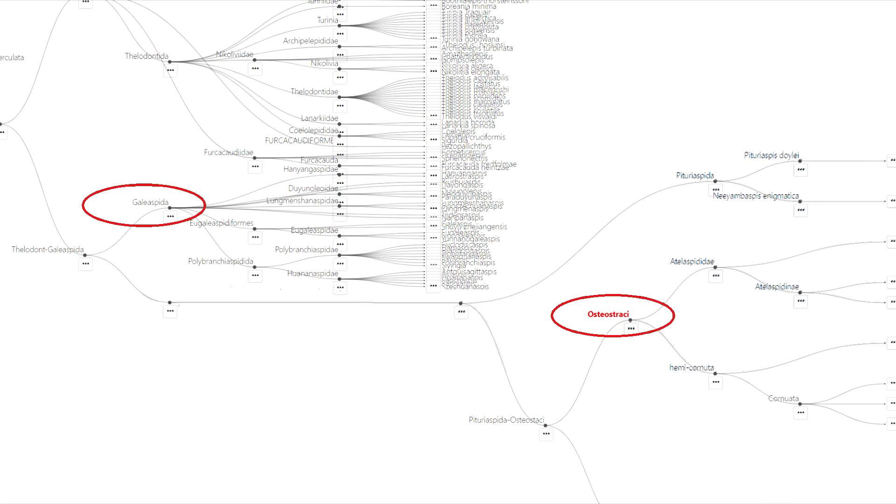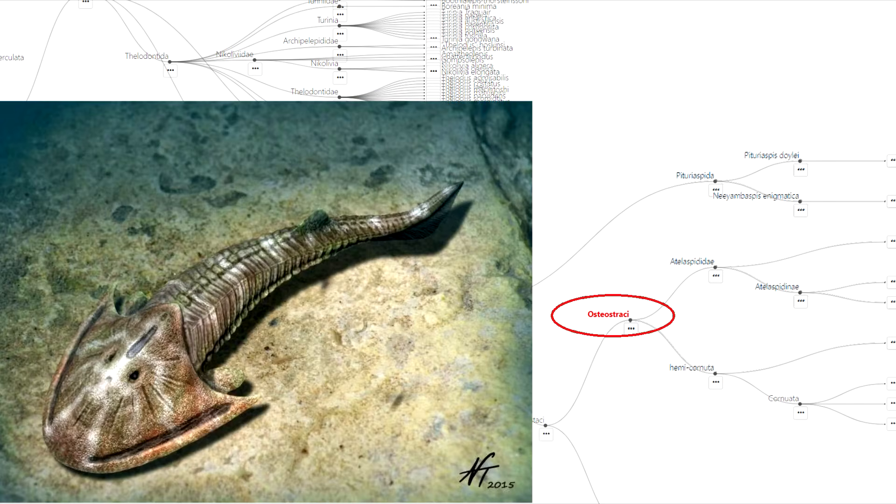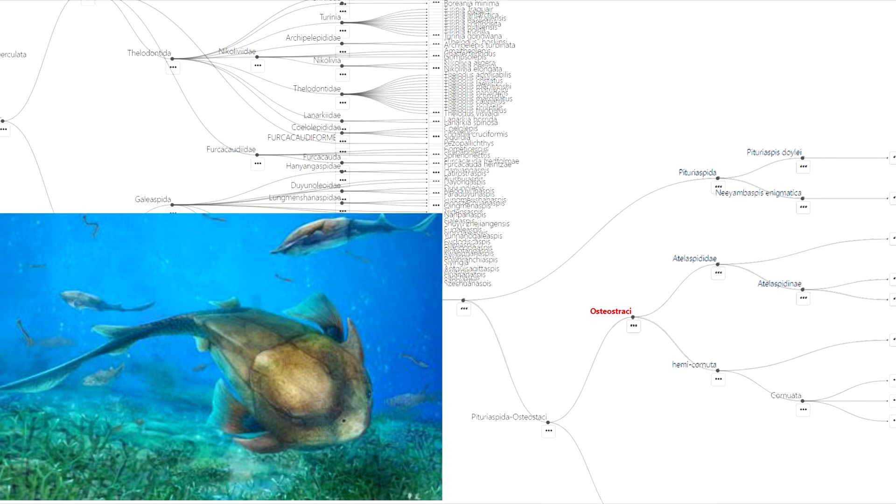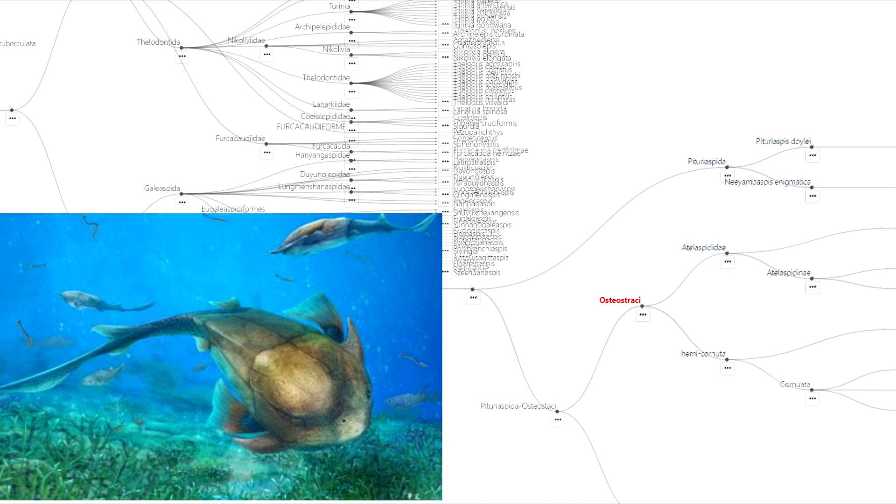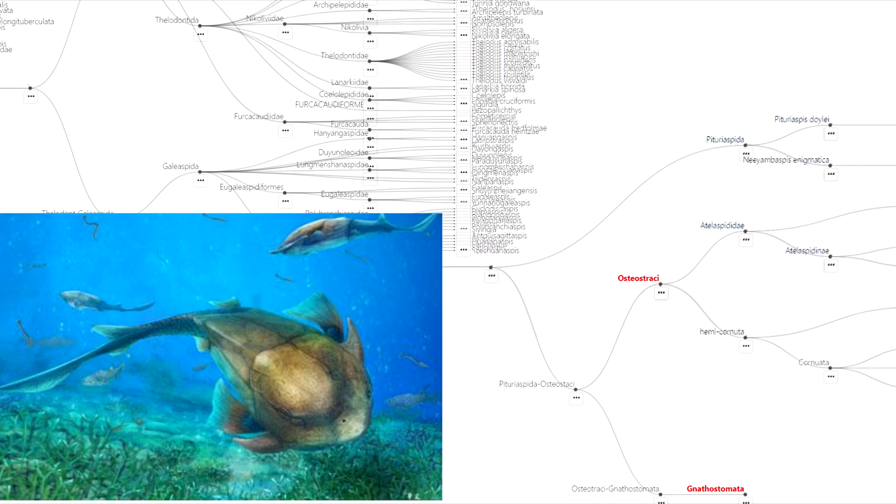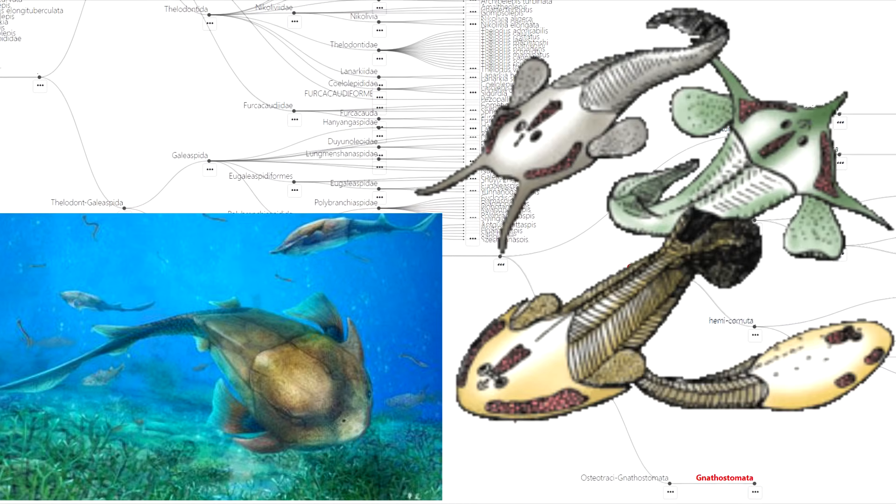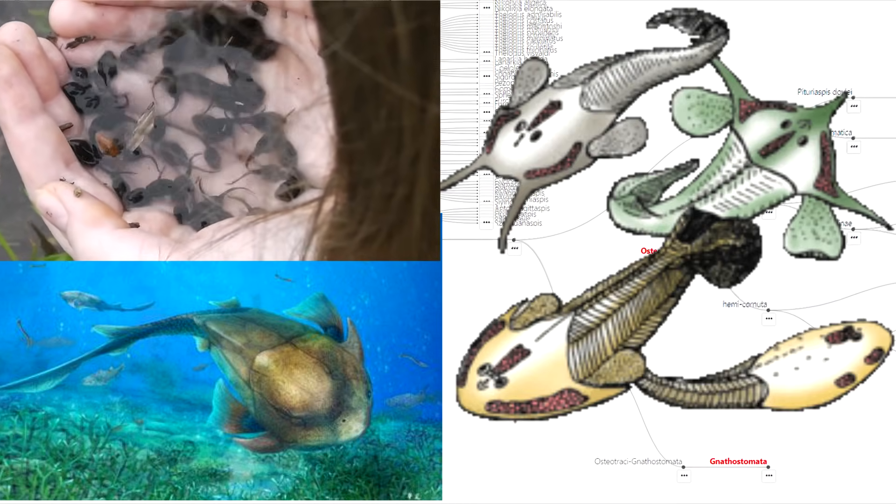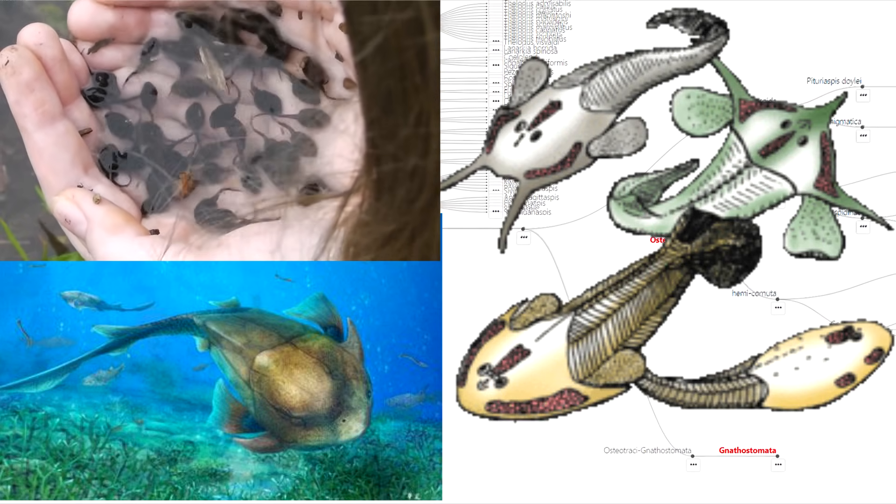Galeaspida and Osteostraci were similar-looking armored fish from the early Silurian through late Devonian periods. One difference being that galeaspids had cartilaginous head shields, while Osteostraci helmets were ossified into actual bone. Osteostraci also commonly had structurally supported paired pectoral fins, which offer a huge advantage in swimming. It's hard to imagine how earlier fish got by without them, wiggling as clumsily as tadpoles for 80 million years.